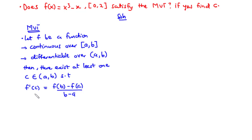Here, f prime of C is the slope of the tangent line, whereas f of B minus f of A divided by B minus A is the slope of the secant line connecting the two endpoints A and B. In actual sense, the Mean Value Theorem states that for any function meeting its conditions, at some point the tangent line has the same slope as the secant line joining the two ends. Now let's solve this question.